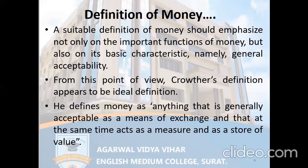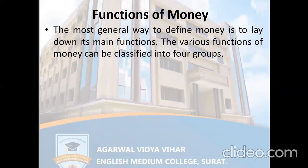Crowther has given three important terms in his definition: medium of exchange, measure of value, and store of value. As money's definition is based on its function, the definition of money is also known as a functional definition. The most general way to define money is to lay down its main functions.